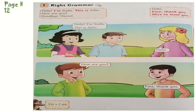You have to open your page number 12. In this picture we will discuss how we meet someone. There are three kids in the first picture: Stella, John, and Hansel. These are friends and they meet up in a park. Stella is asking 'Hello, I'm Stella.'